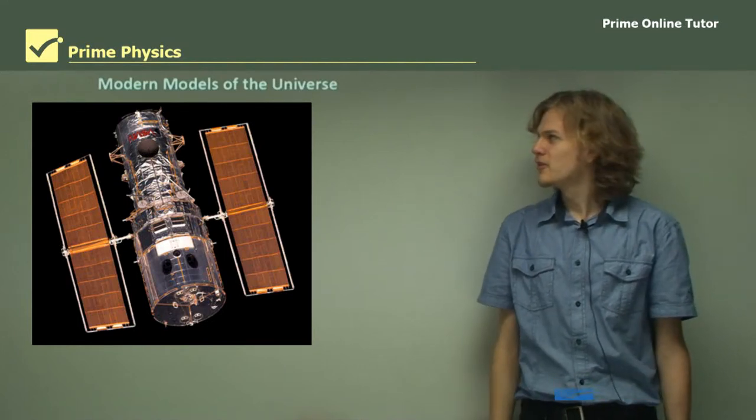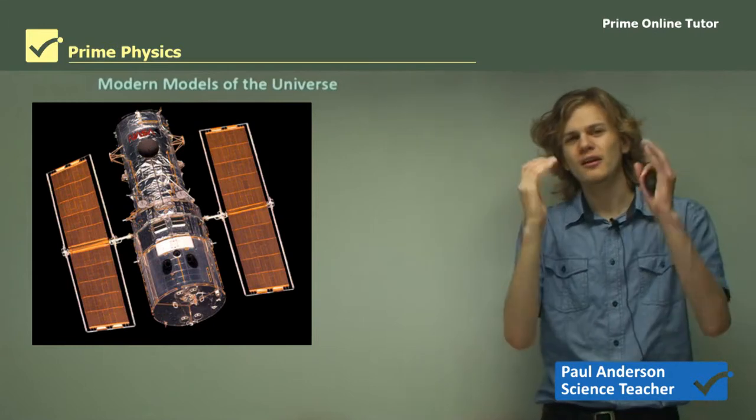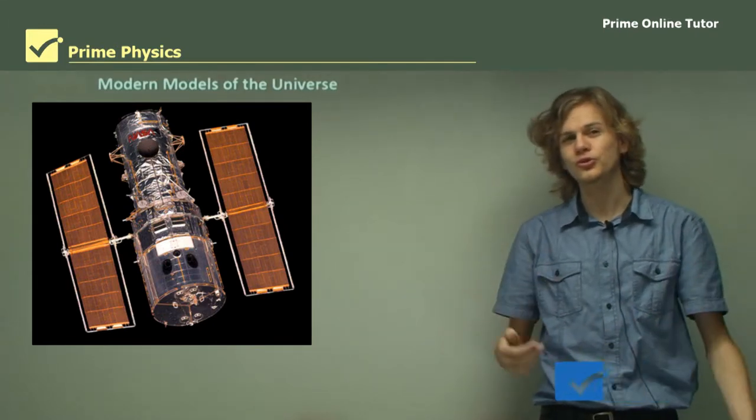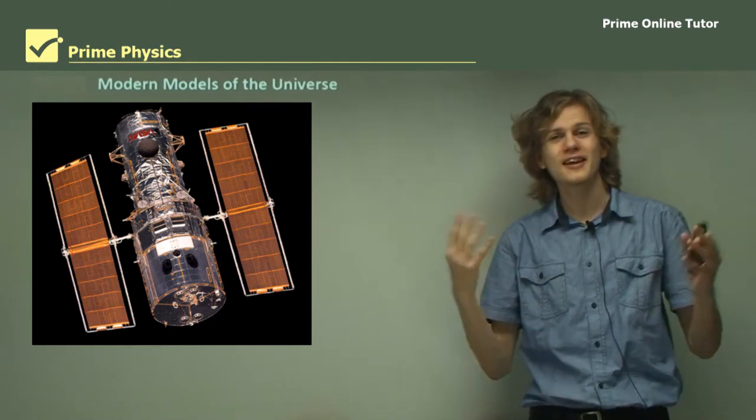Hello, everyone. Today we're starting on a section called Modern Models of the Universe. We've been looking at various geocentric and heliocentric models of the universe and some of the physical laws describing them. Now we're finally getting onto what our current understanding of the universe is.